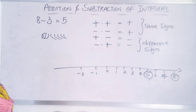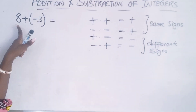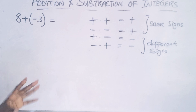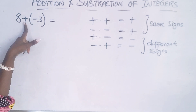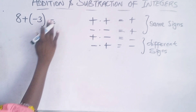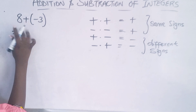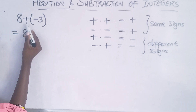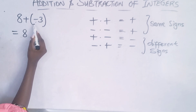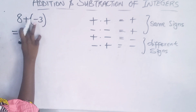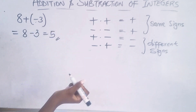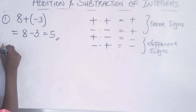In a question like eight plus negative three, you must remove the brackets by multiplying your signs. You have eight, and plus times minus gives you minus — because they are two different signs. So eight plus (−3) becomes eight minus three, which gives you five.